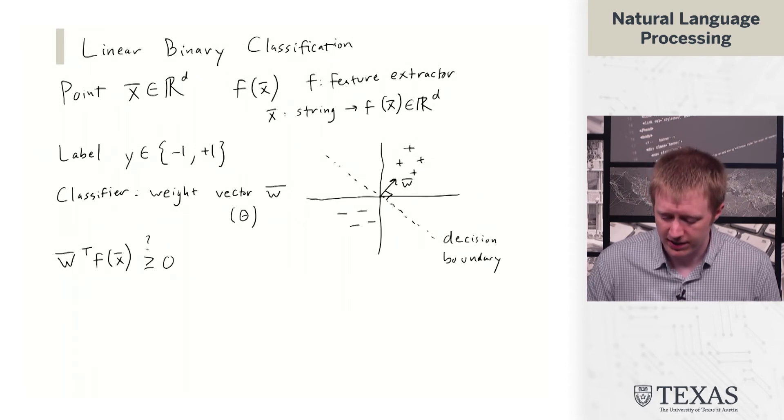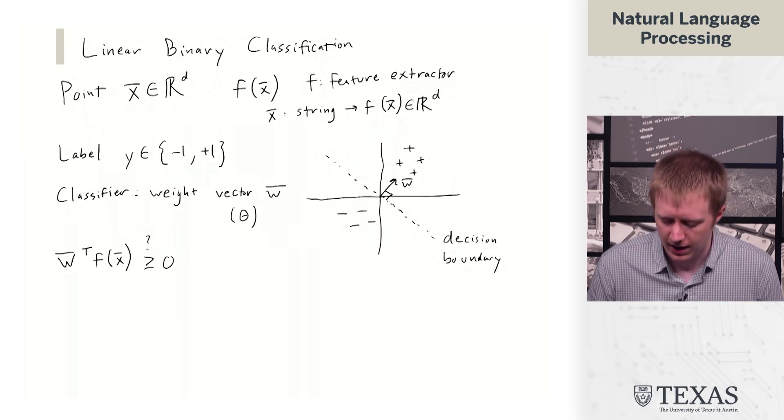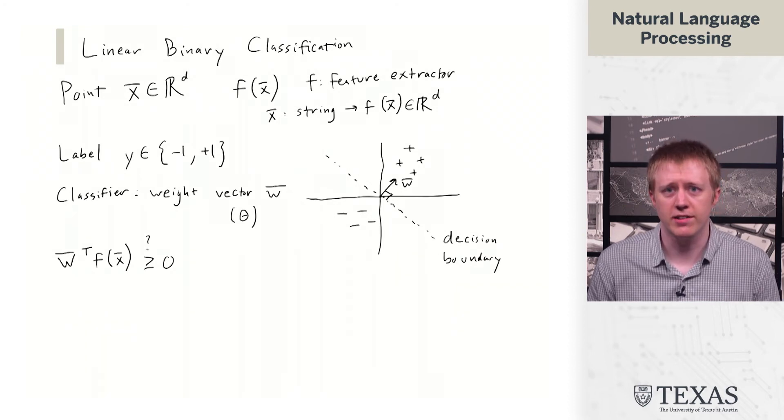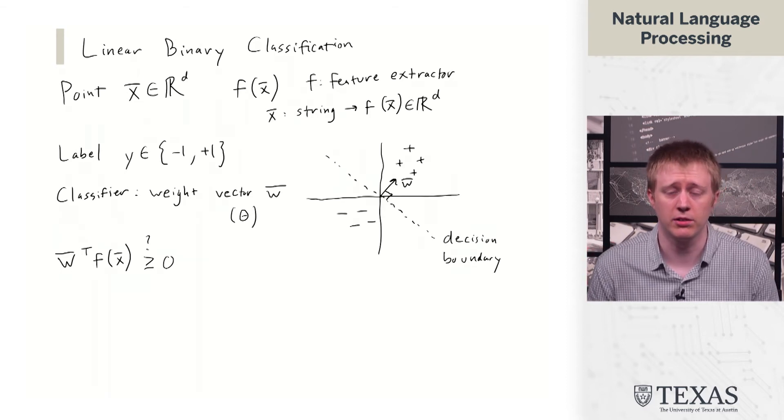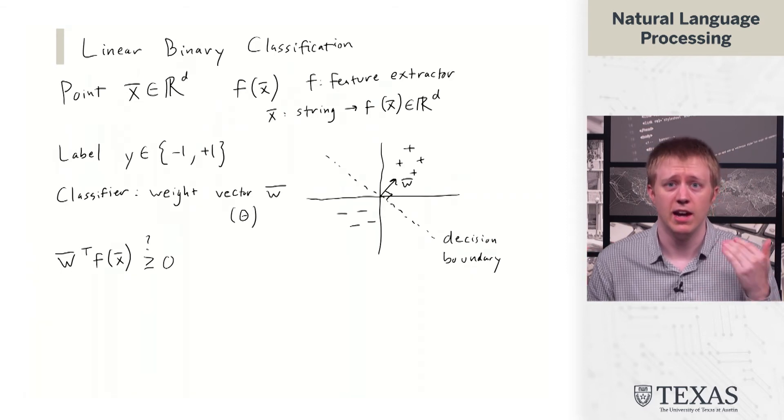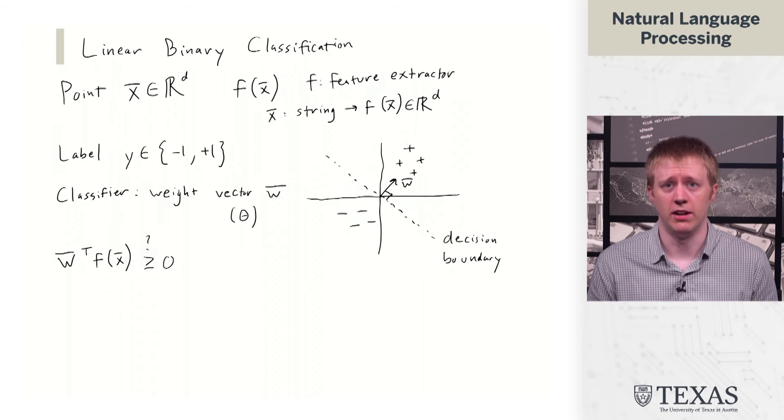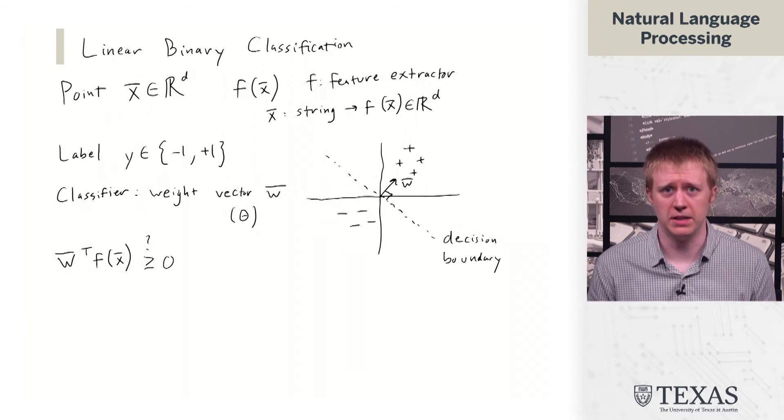Any point on the top right side of this decision boundary is going to be classified as positive, because the dot product with w is going to be positive. Any point on the other side of the boundary is going to be negative.